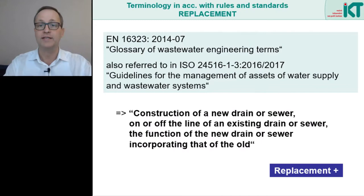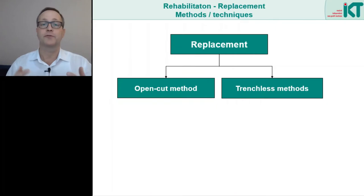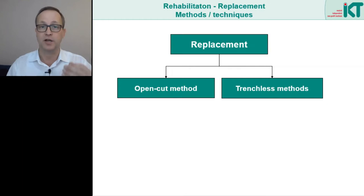And that brings us to the second point: what are the basic methods or techniques for replacing sewers and pipelines? With replacement there are basically two options, just as with new construction. Number one, the open cut method, and number two, the trenchless method. The open cut method corresponds technically to a large extent to the open cut new construction, but of course this time we are working on the existing system, and there may still be other pipelines underground that we must not damage.